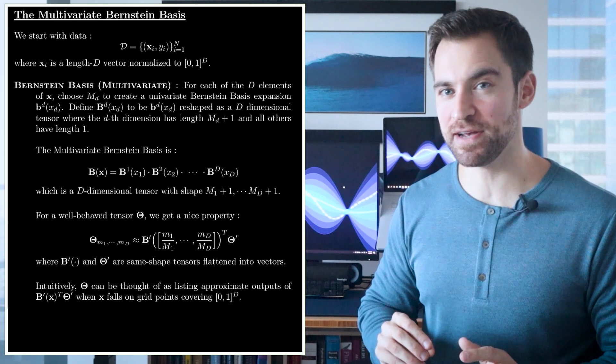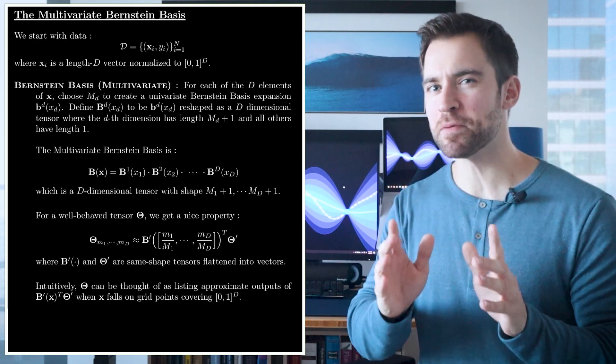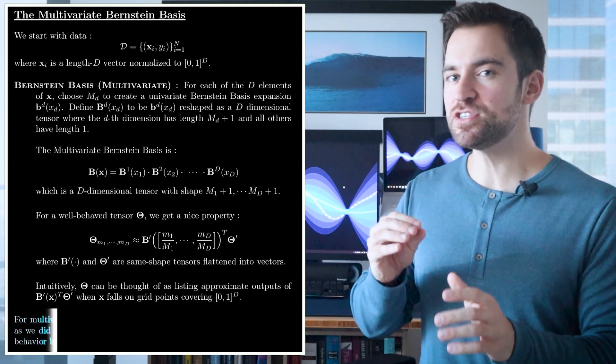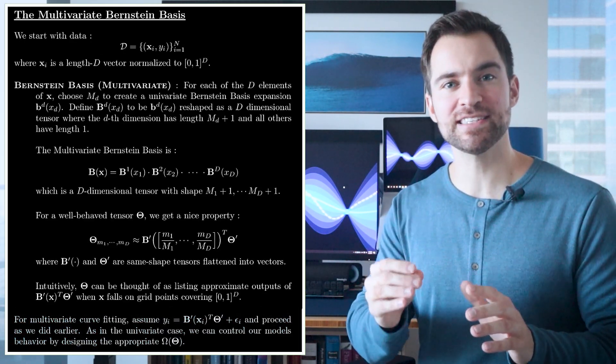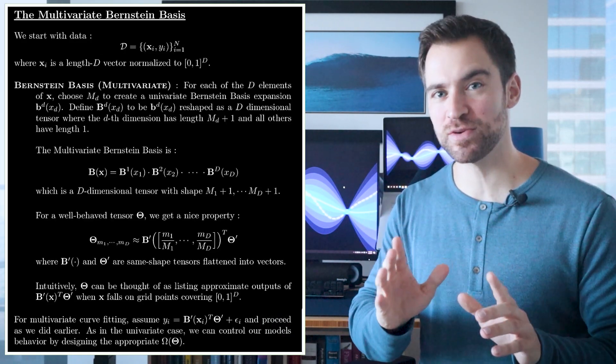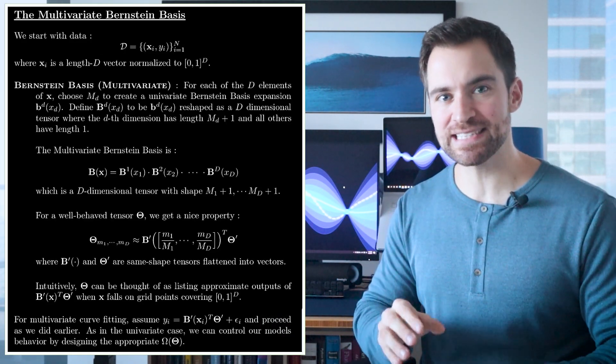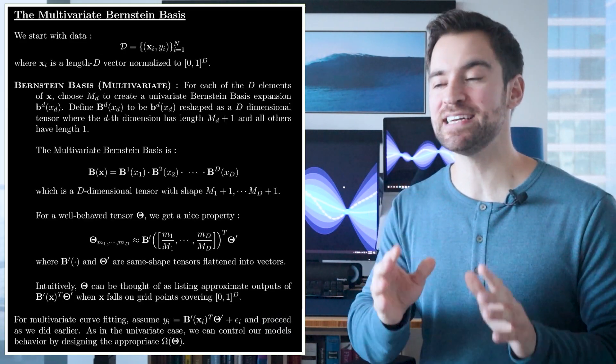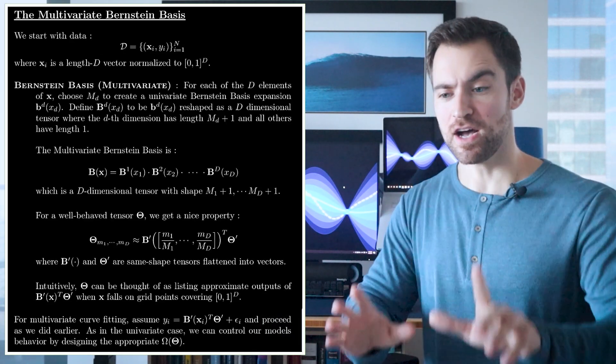Okay, so that covered the multivariate Bernstein basis, but we still need to bring it back to the world of modeling. Fortunately, that's easy. We just assume yi is the dot product of b of xi and theta plus some noise. Then, we proceed just as we did earlier. As in the previous case, it'll be easy to control the outputs of this model by adding a term to a loss function which penalizes values of theta.